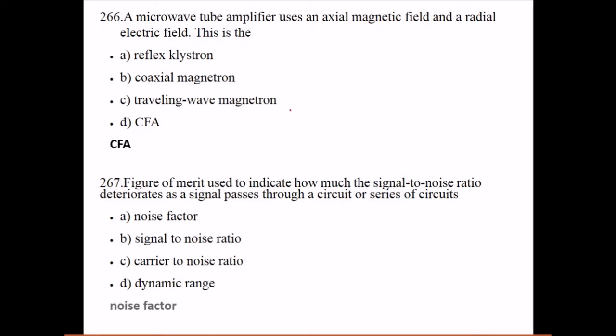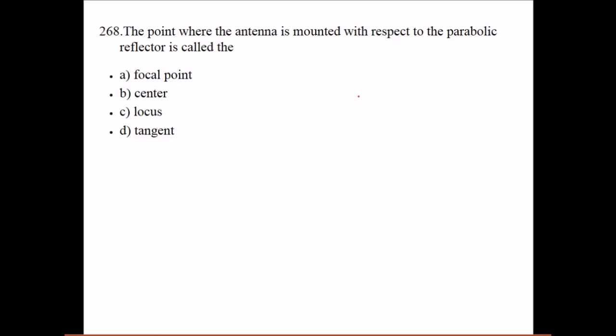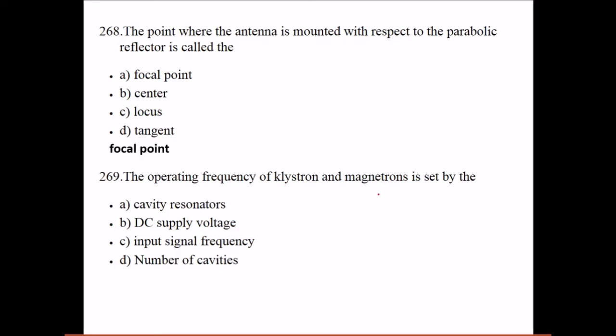The figure of merit used to indicate how much the signal-to-noise ratio deteriorates as a signal passes through a circuit or a series of circuits is the noise factor. The point where the antenna is mounted with respect to the parabolic reflector is called the focal point. The operating frequency of klystron and magnetrons is set by the cavity resonators. Using a small reflector to beam waves to the larger parabolic reflector is known as Cassegrain feed.